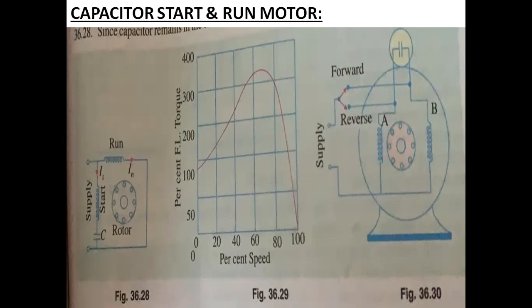For two value capacitor run motors, they are used where high starting torque is needed. Looking at the torque-speed curves: as speed increases, torque increases, and after the maximum torque is attained, if speed continues to increase, torque reduces. These are used for applications requiring high starting torque.